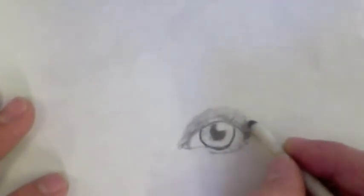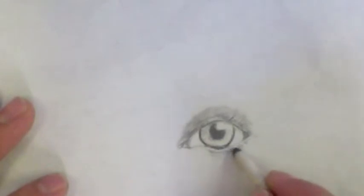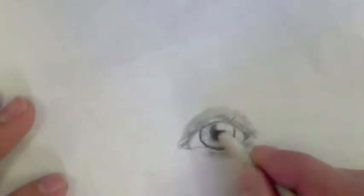and a little bit below the eye as well. So, I'm using a blender here, and I'm just smoothing out some of the lead that I placed on the paper, giving it a little bit of a smooth gray tone.